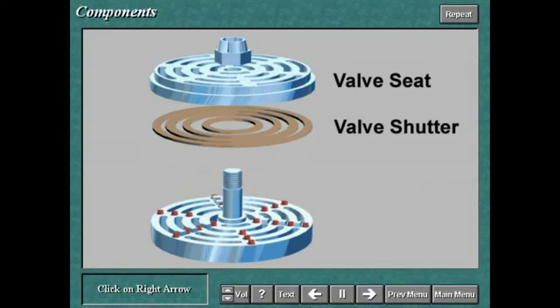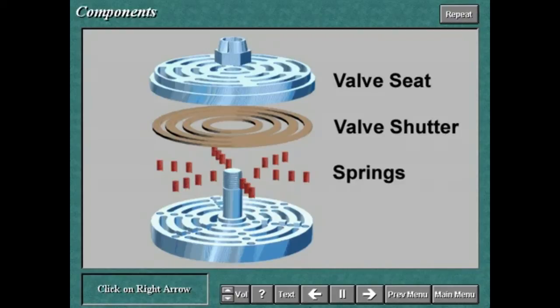The valve shutter is the component that alternately opens and shuts the flow ports. The springs are the components that return the valve shutter onto the seat when the flow of gas has stopped. The valve stop or guard is the part against which the valve shutter stops. It determines the degree of lift that the shutter may have.